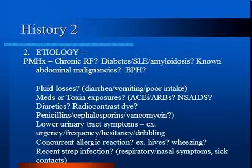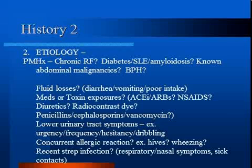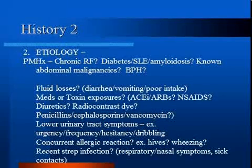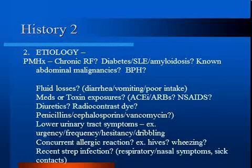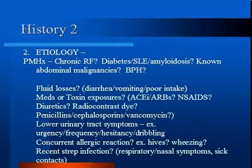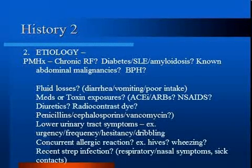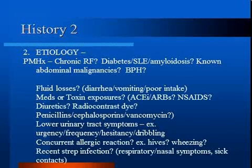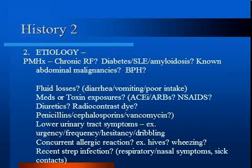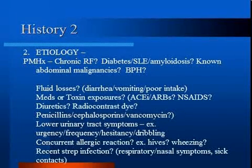In regards to etiology, ask about a history of renal failure, diabetes, lupus, and amyloidosis. Past abdominal malignancy or BPH may suggest an obstructive cause. Common insults include hypovolemia and medications, so obtain a detailed medication history including radiocontrast dye, and consider dose adjustments for drugs like digoxin or certain antibiotics. Lower urinary tract symptoms may suggest prostatitis or BPH. Allergic symptoms such as hives, angioedema, and wheezing may suggest acute interstitial nephritis. Recent strep throat may suggest post-strep glomerular nephritis.